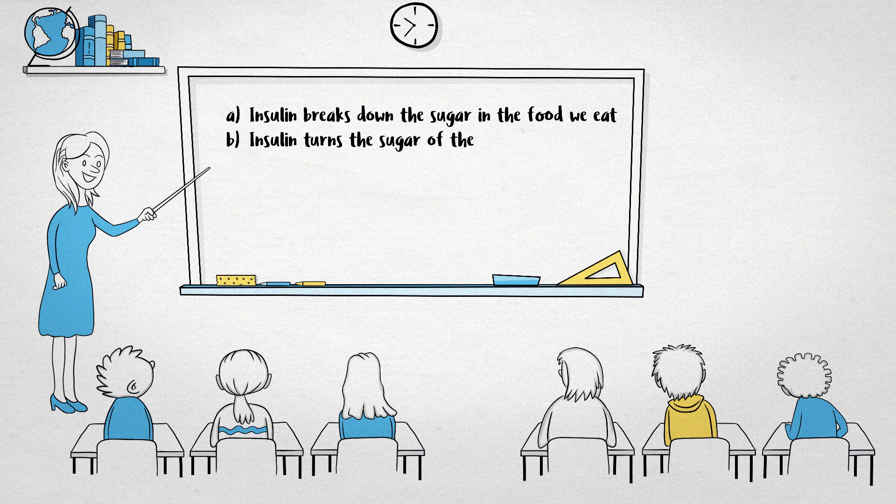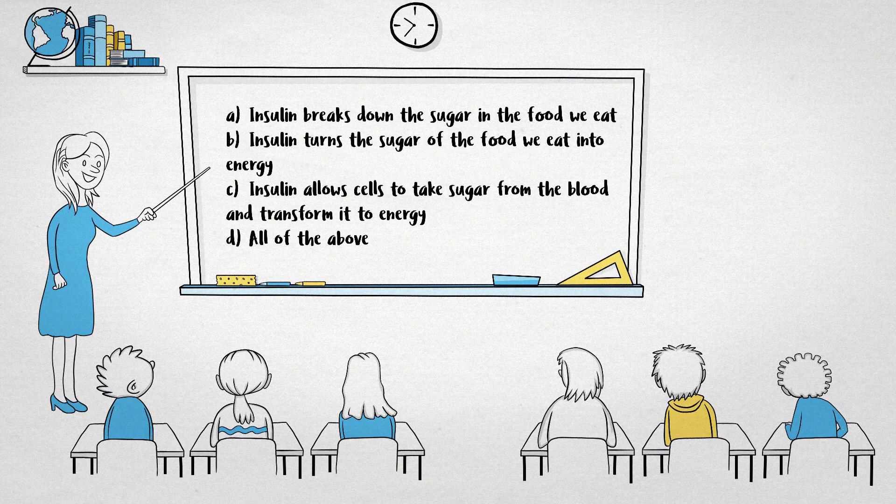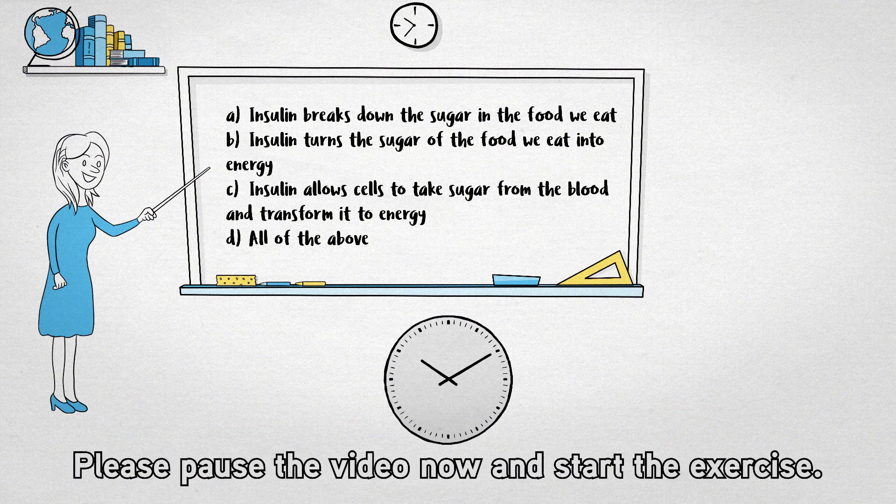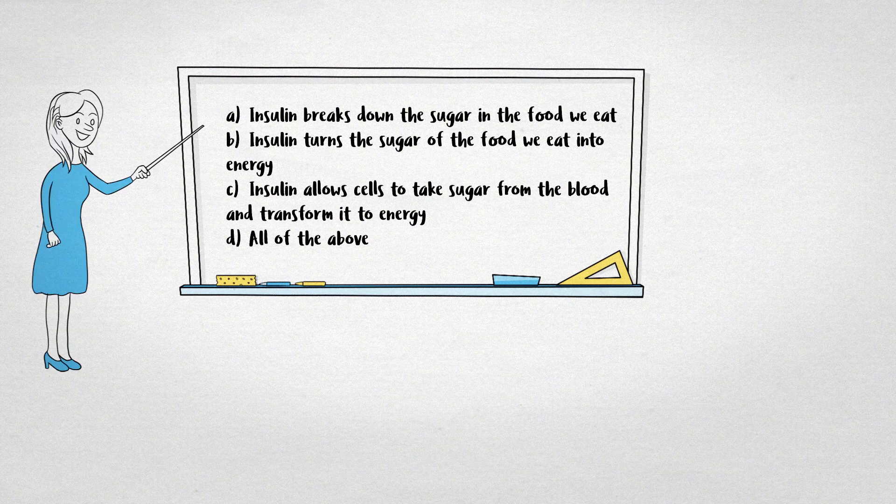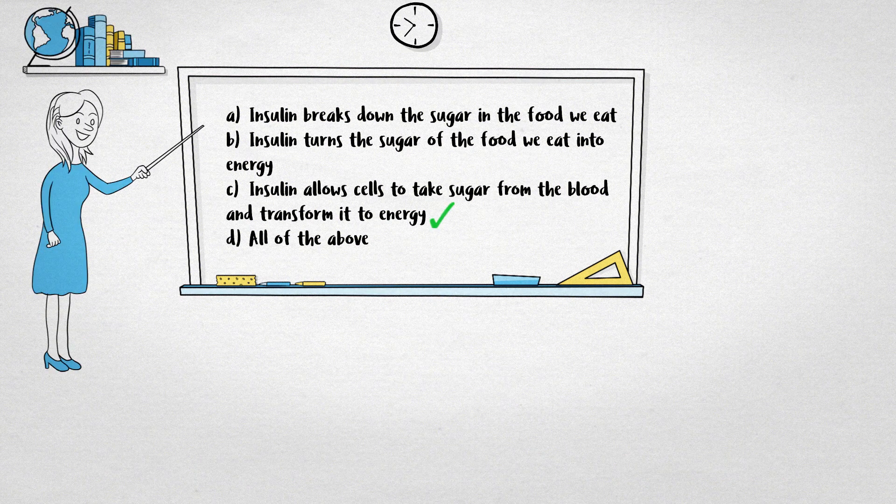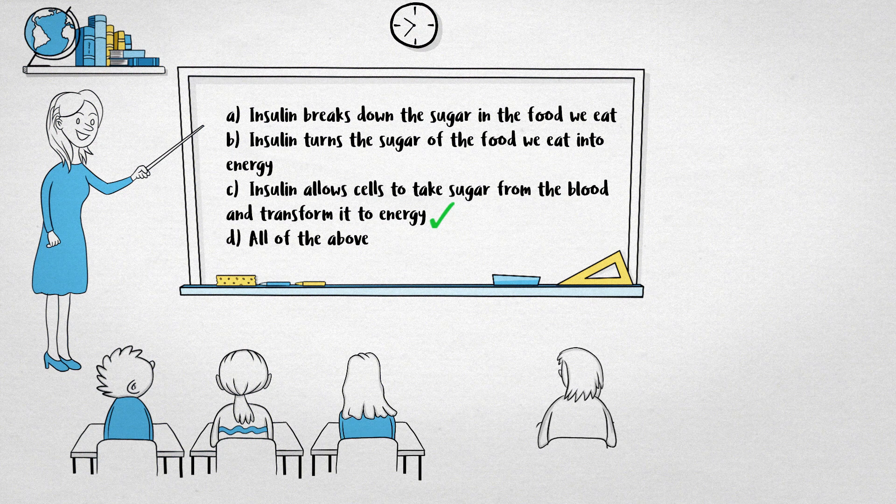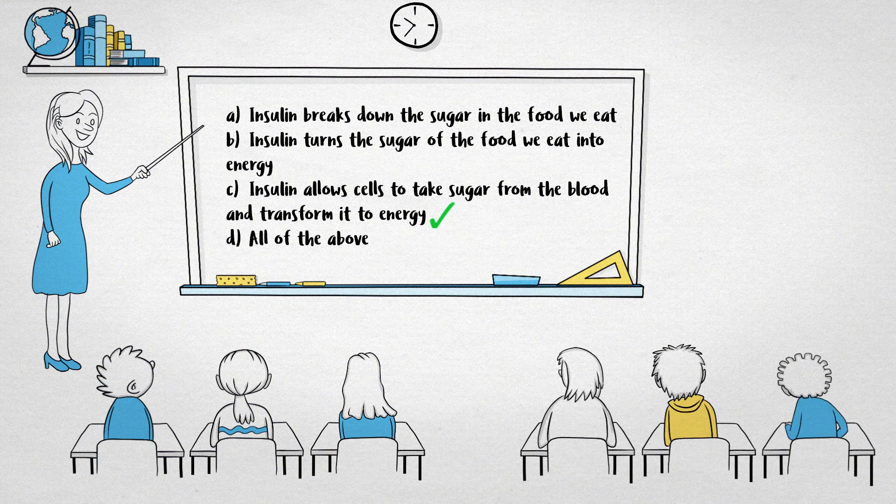Why is insulin important? Insulin is a hormone that helps cells in the body take in sugar from the food that we eat and convert it into the energy we need.